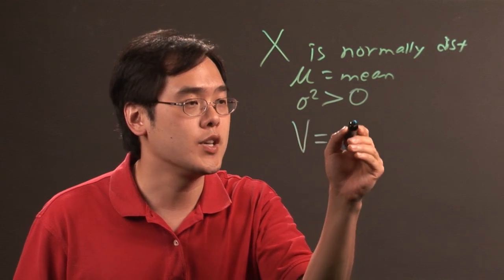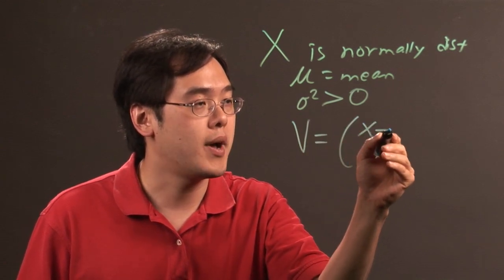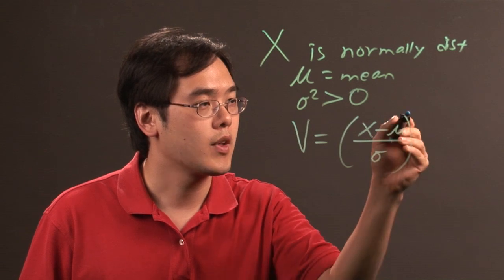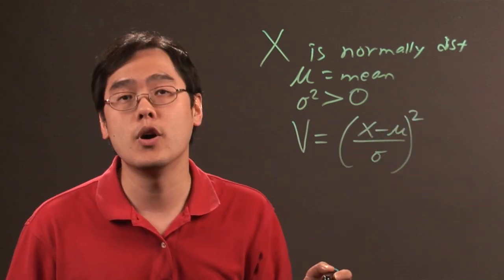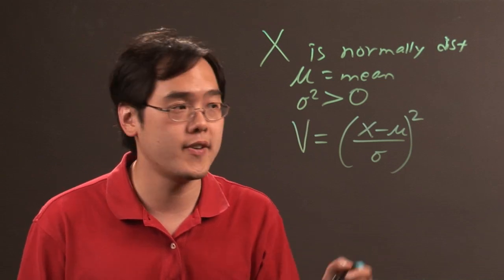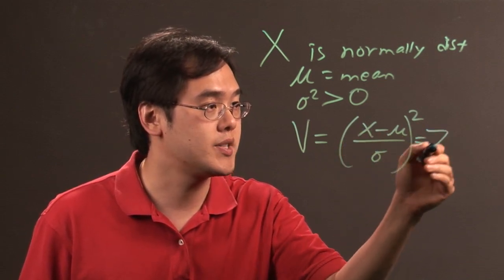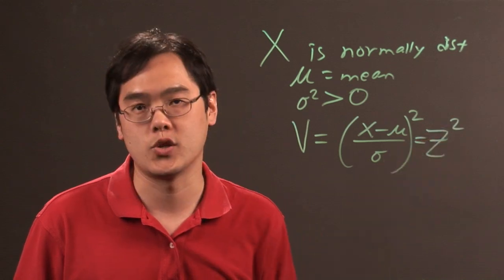Then if V is equal to X minus mu over sigma quantity-squared, now if you think about this for a minute, X minus mu over sigma is the normal random variable. So the inside can be expressed as Z quantity-squared,